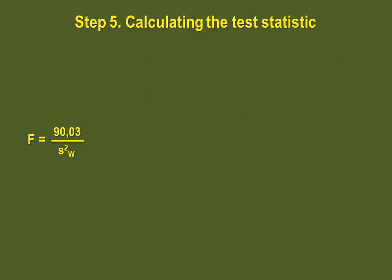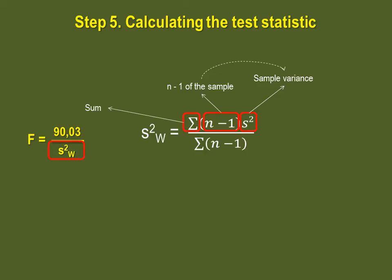We can finally calculate our denominator, the within group variance. Here is the equation. We have the variance of a given sample, which we multiply by that same sample's n minus 1. Repeat that for as many samples as you have and then add all of those results together.